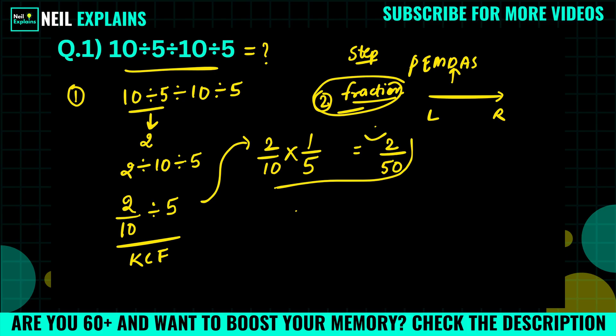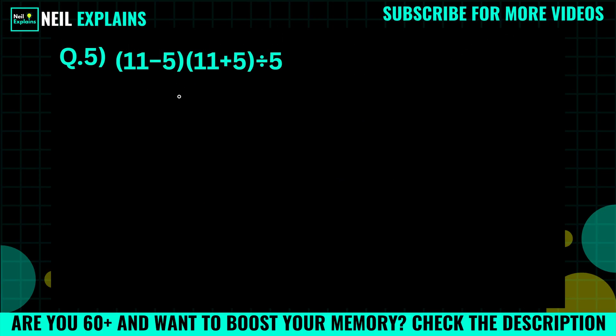I don't want to confuse anyone, so coming to the next question. The question is 11 minus 5 in parentheses, 11 plus 5, divided by 5.